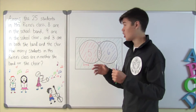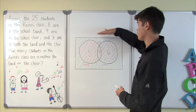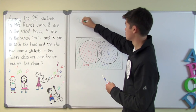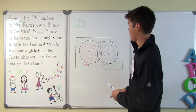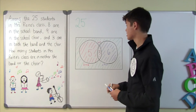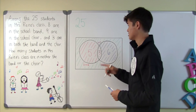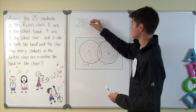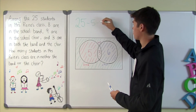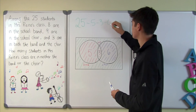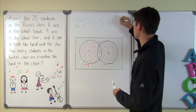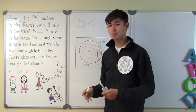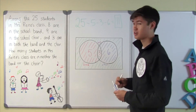Finally, we just need to solve for the green section. Since we know there are 25 students in the whole rectangle, and we know the red section is 5, the purple section is 3, and the blue section is 6, all we have to do is 25 minus 5 minus 3 minus 6, which equals 11. The question asks how many students in Mrs. Reitz's class are in neither band nor choir — the answer is 11.